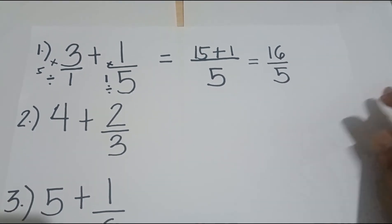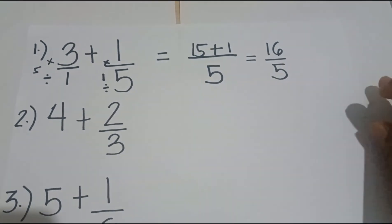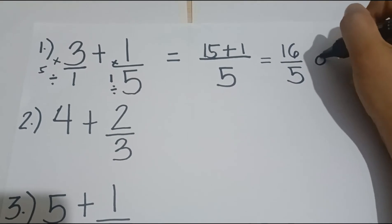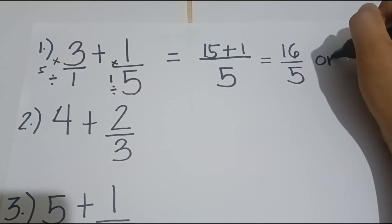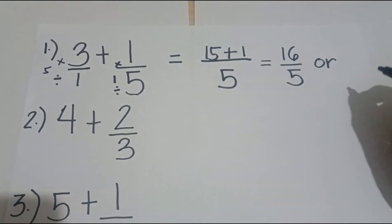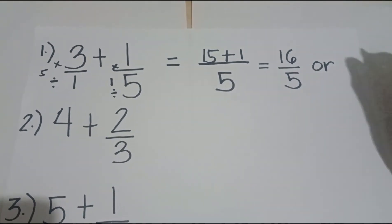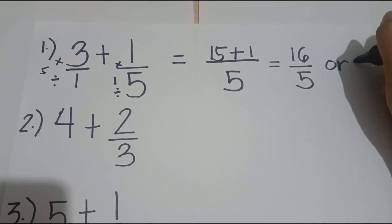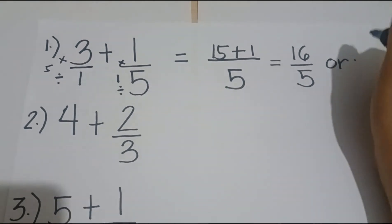The answer is 16 over 5, or in simplified form, the answer is 3 and 1 fifth.